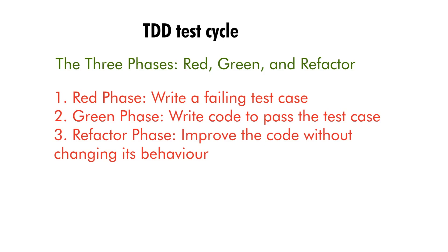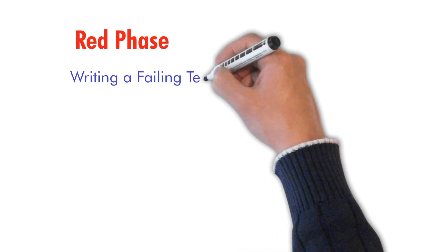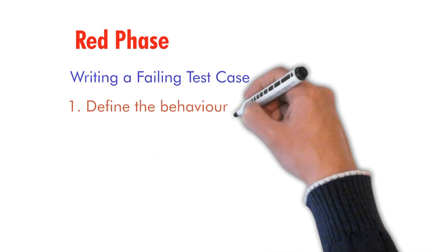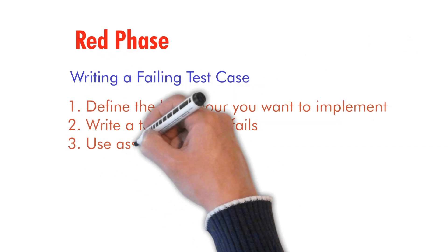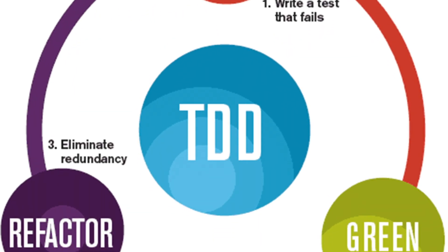The red phase is the first phase of the TDD cycle. In this phase, you write a failing test case that defines the behavior you want to implement. This test case should use assertions to check the expected behavior. The goal of this phase is to define the requirements for the code you will write in the next phase.